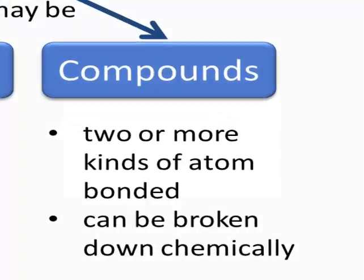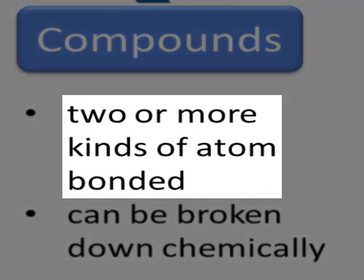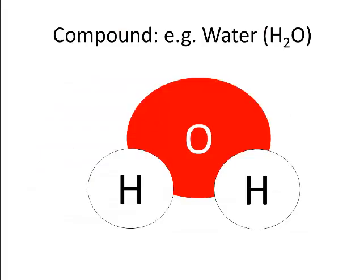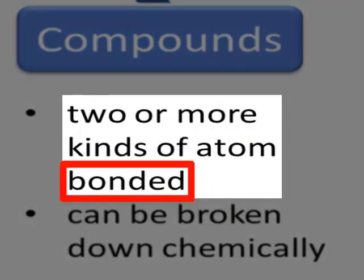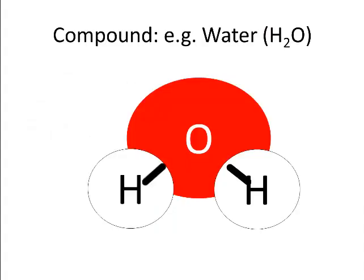The formula of water is H2O. So we can see there are two or more, in this case it's two kinds of atoms. Oxygen and hydrogen are not the same kind. And these different kinds of atoms are bonded together. They're not just sitting next to one another. They're bonded together.